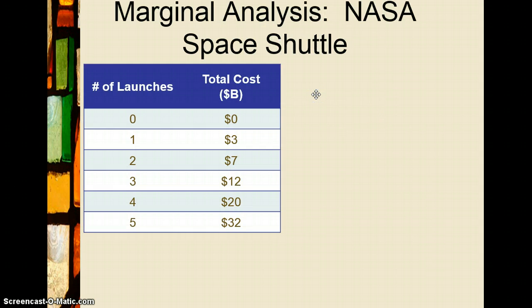This next example is about whether NASA should expand their space shuttle program. A professor named Koston Bannafoot testified in front of Congress that they should expand from four launches a year to five, because at four launches per year the total cost was twenty billion dollars and the total benefit was twenty-four billion dollars.